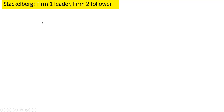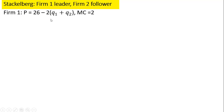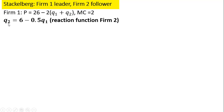Now let's move on to Stackelberg. We're going to assume firm 1 is the leader — firm 1 sets its output first, firm 2 sees firm 1's output and then sets its own. We have the same inverse market demand and the same marginal cost structure. We'll need firm 2's reaction function because when firm 1 sets its output, it considers how firm 2 will respond to that output.